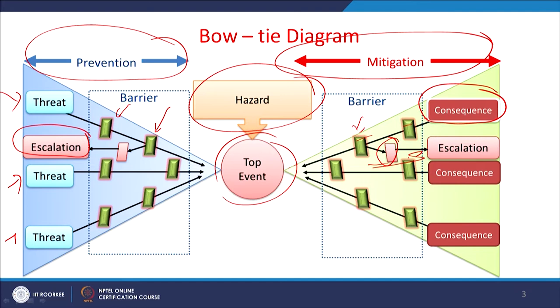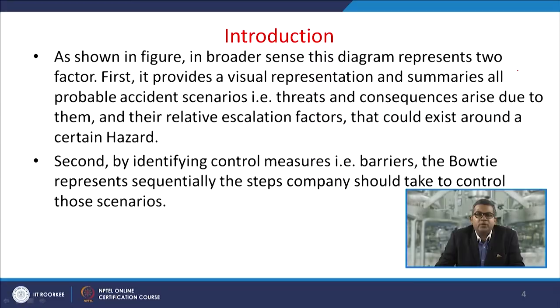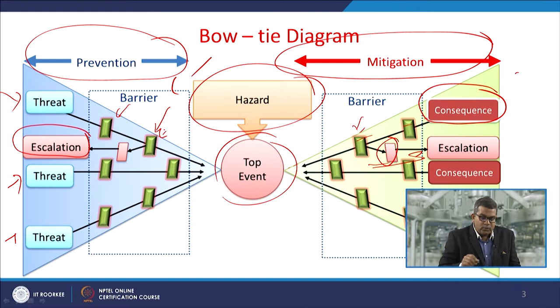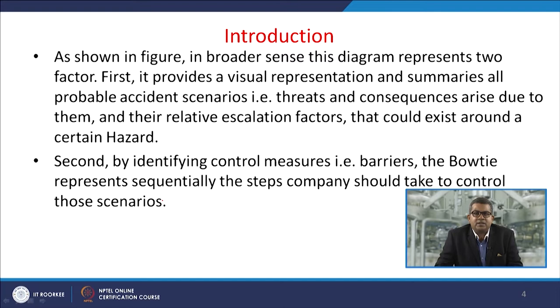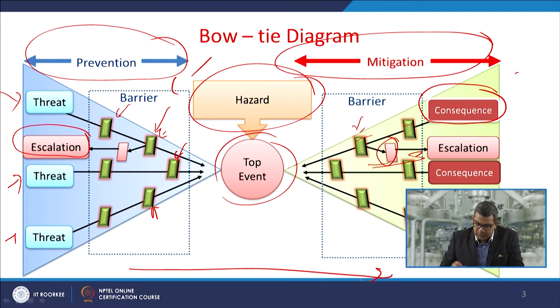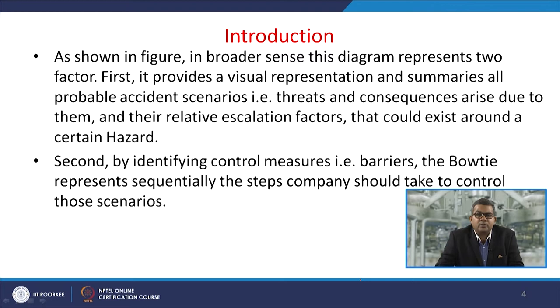The broader sense of this diagram represents two factors. First, it provides a visual representation and summarises all probable accident scenarios — the threats, consequences, and their relative escalation factors that could exist around certain hazards. Second, by identifying the control measures, which are the barriers, the bow tie represents sequentially the steps the company should take to control those scenarios, giving a broader spectrum of required actions.